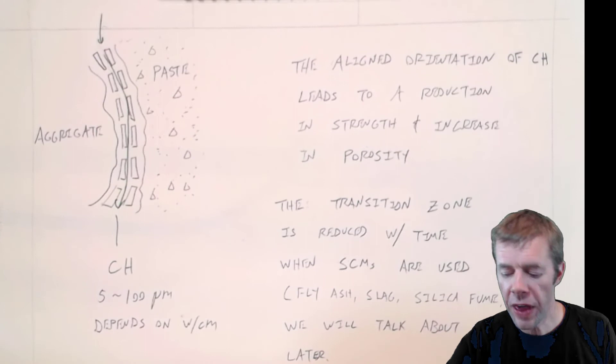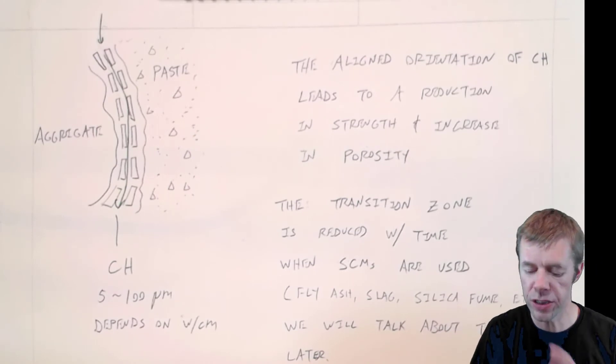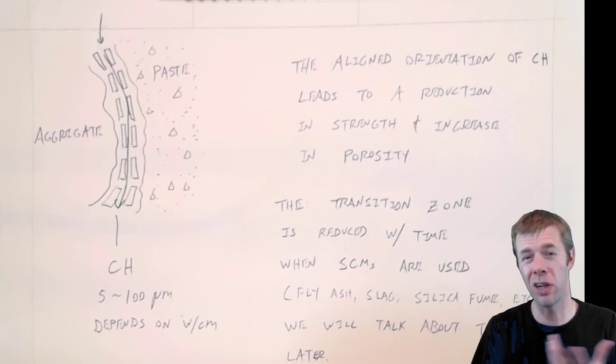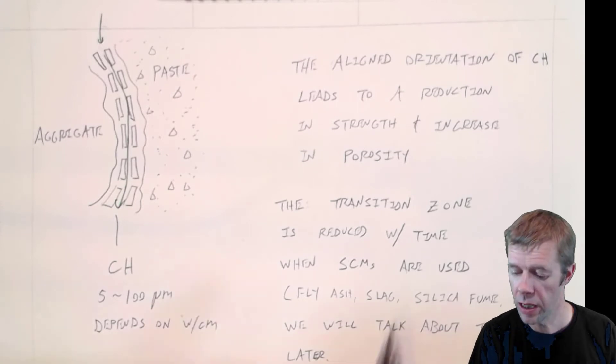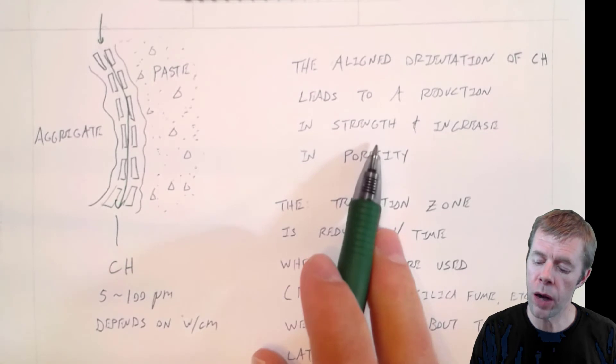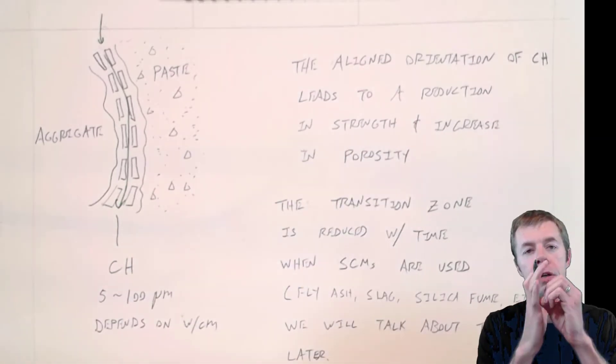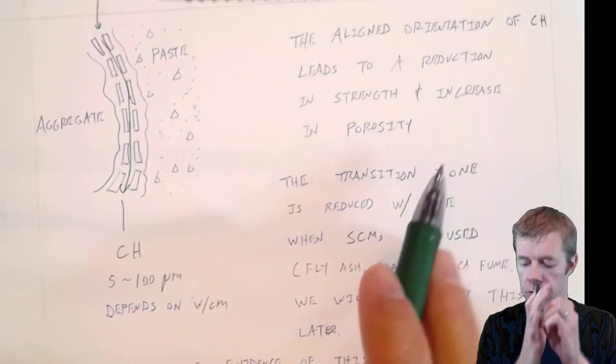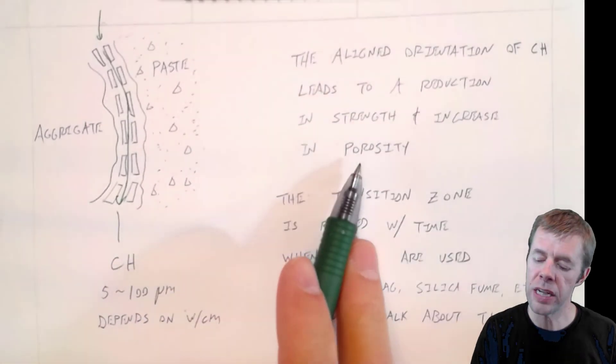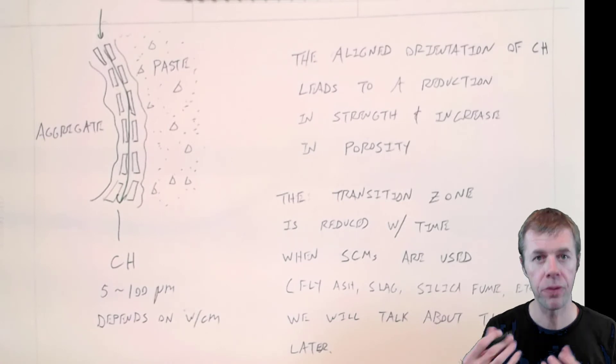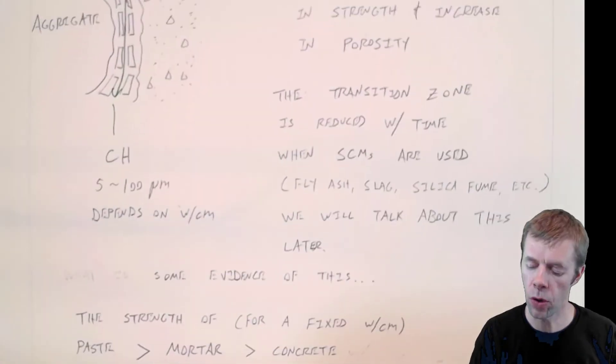So this, people think that this aligned orientation of calcium hydroxide, just more calcium hydroxide in this region. Calcium hydroxide is kind of weak. It's kind of porous. It can dissolve easily. It leads to a reduction in strength. That's true. There's not as good a bond between the aggregates and the cement paste. And there's an increase in the porosity or increase in the permeability, the outside penetration coming into our concrete.